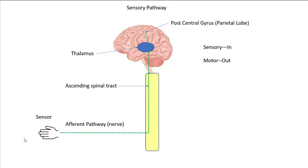So this information out here gets converted by the sensory receptor or sensor and then follows what's called an afferent pathway, which is usually a nerve, to the central nervous system. Once it gets to the spinal cord, it starts to move up a special pathway called an ascending spinal tract. So ascending tracts are all sensory, remember sensory in.